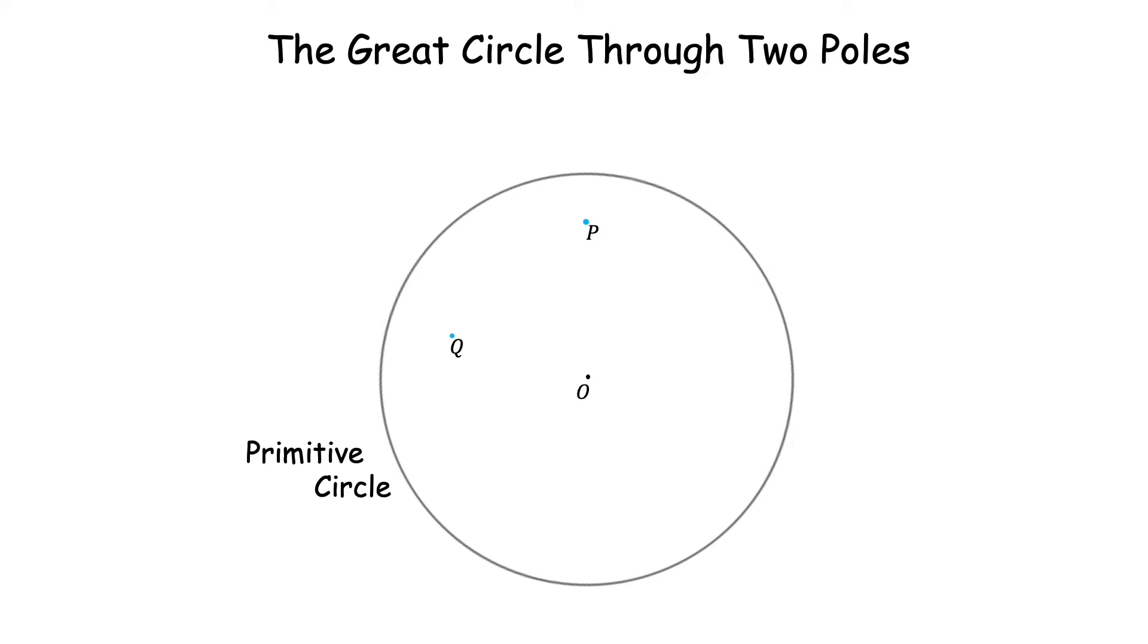So in space they will define a unique plane. That plane will project in the stereographic projection as a great circle. I have shown it in red here. Our job in this video is to find and draw this great circle passing through two points P and Q, two poles P and Q.